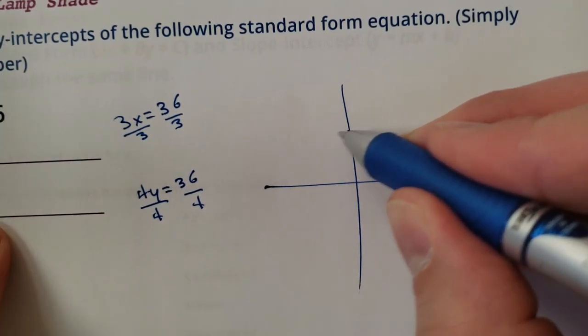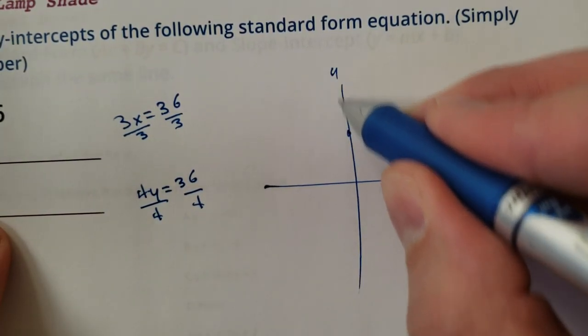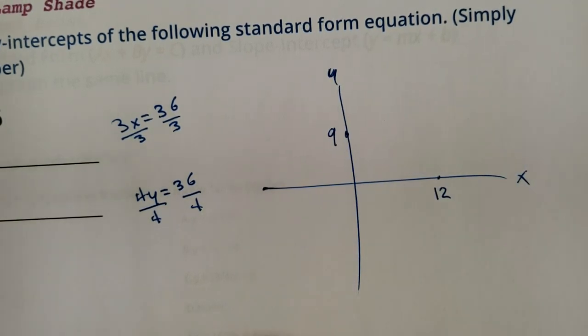And then my y-intercept is 9. We would hit 9 on the y-axis. Well, that's a y and that's a 9. There we go. Then you can just play connect the dots.